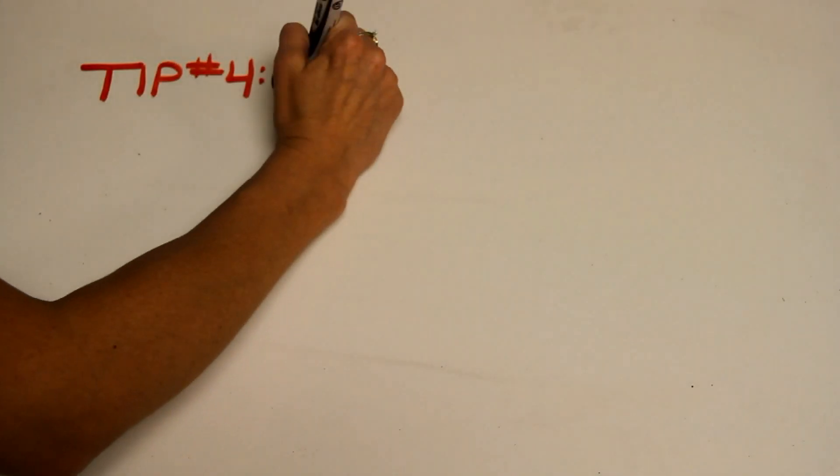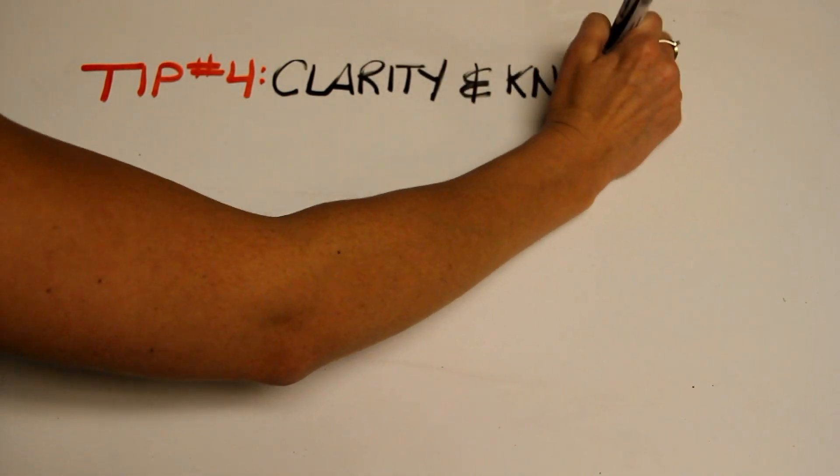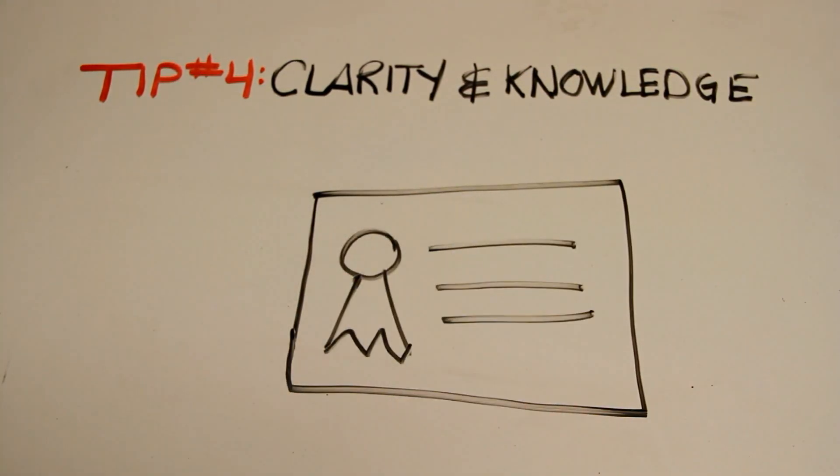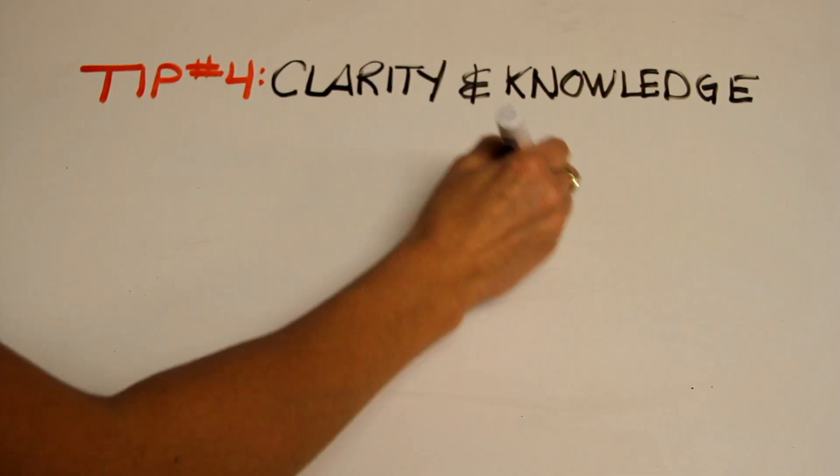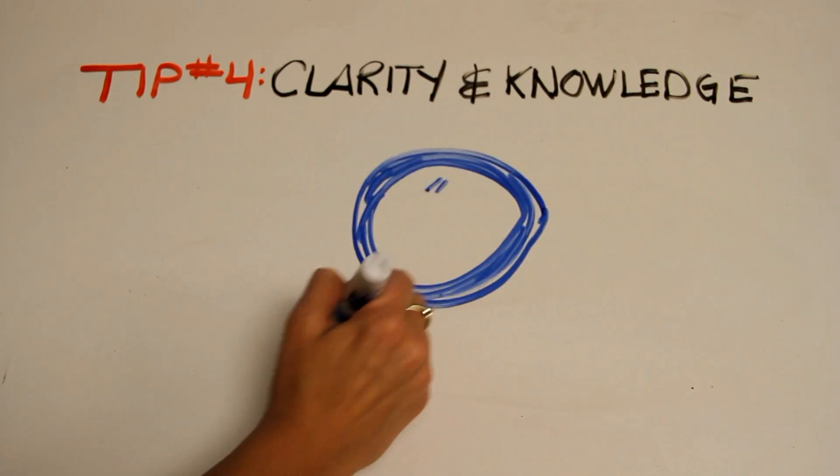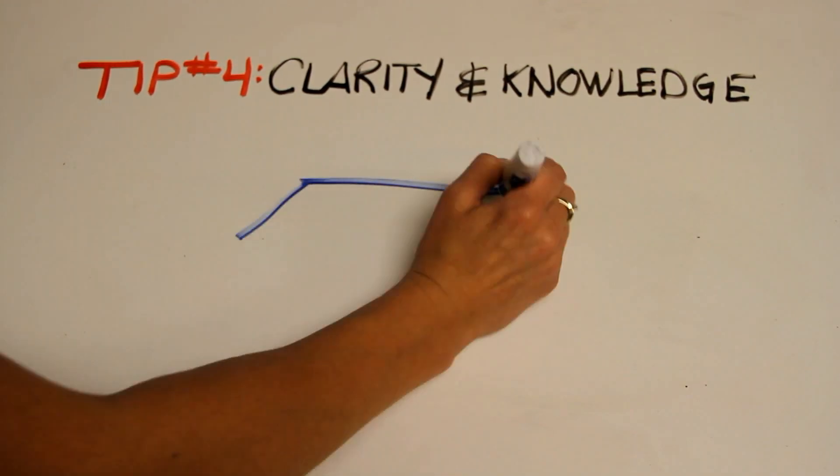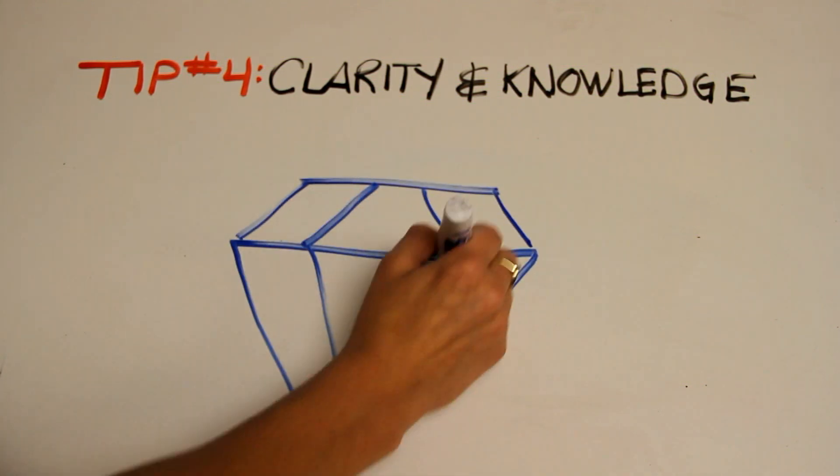Tip number four: clarity and knowledge. When you're communicating with others, be sure to only deliver information you are qualified and prepared to provide. If you're unsure, find the correct information. Understand your audience and what they do and do not know. Use simple words when possible to keep your message crystal clear.